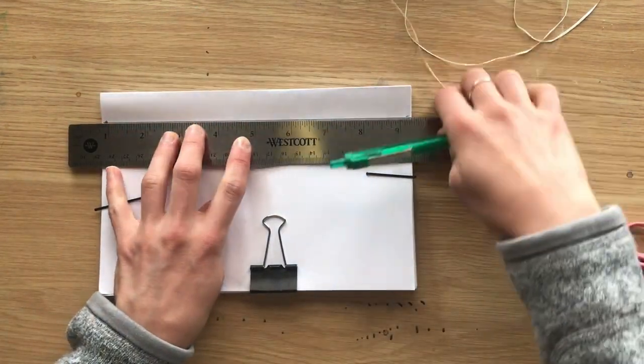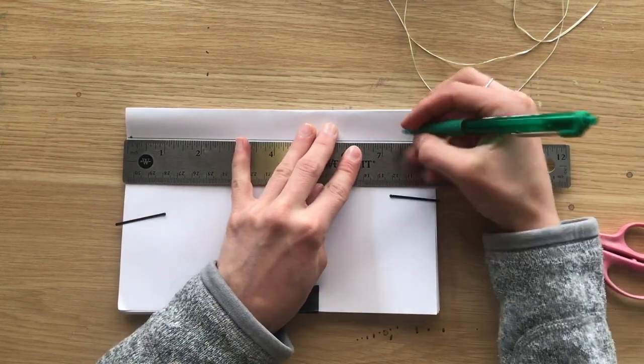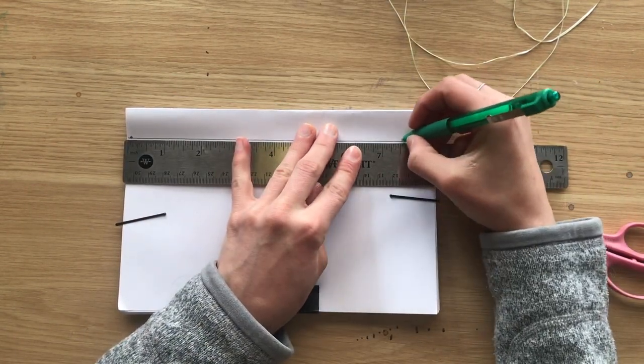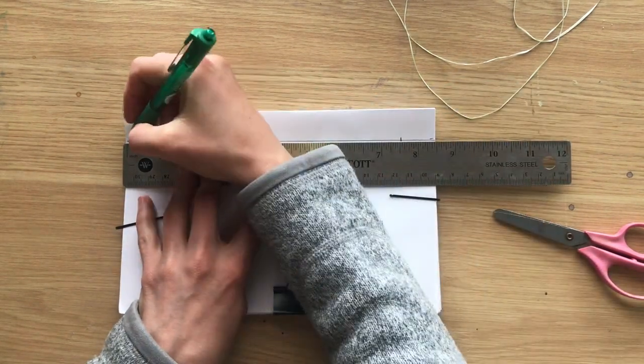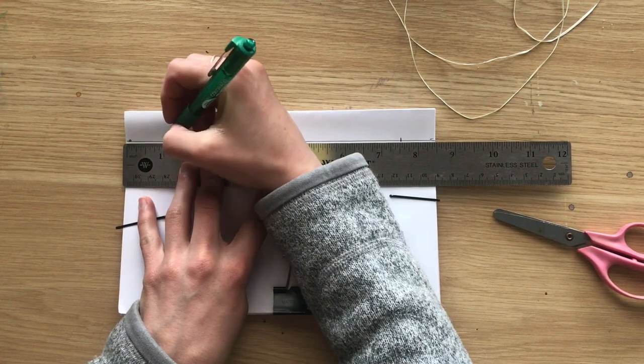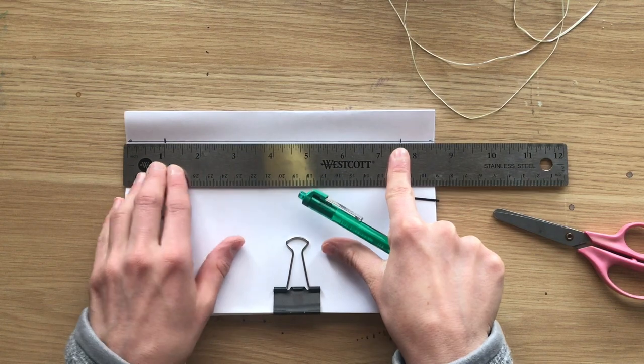Connect your two points. Now we're going to measure where we're going to poke holes so we can sew our book together. You are going to measure an inch in from each side. So if you have your ruler lined up one to eight and a half inches, you're going to make a tick mark on the one and a tick mark on the seven and a half.